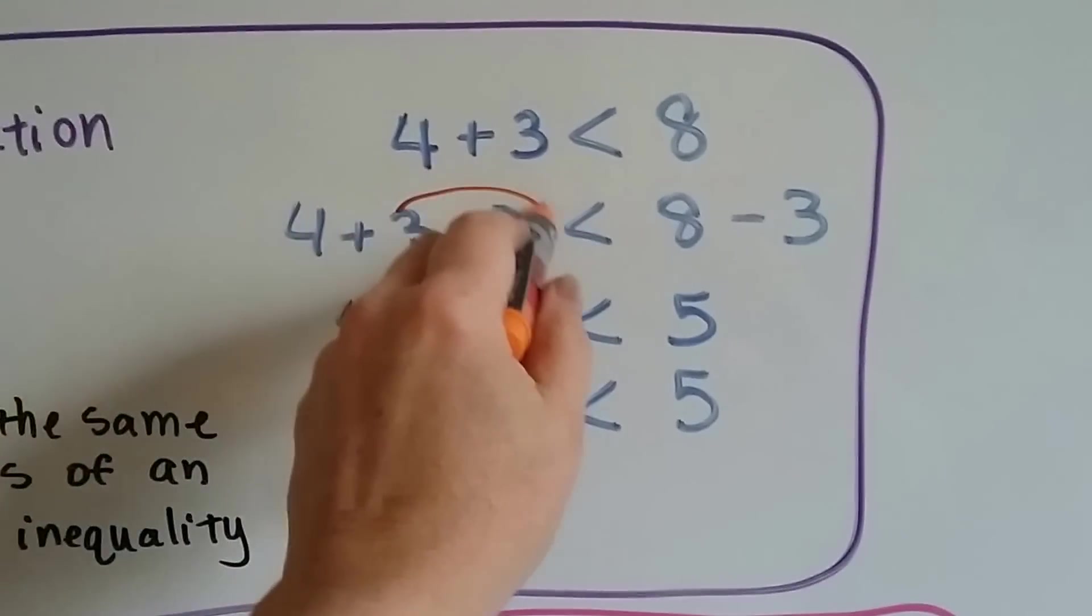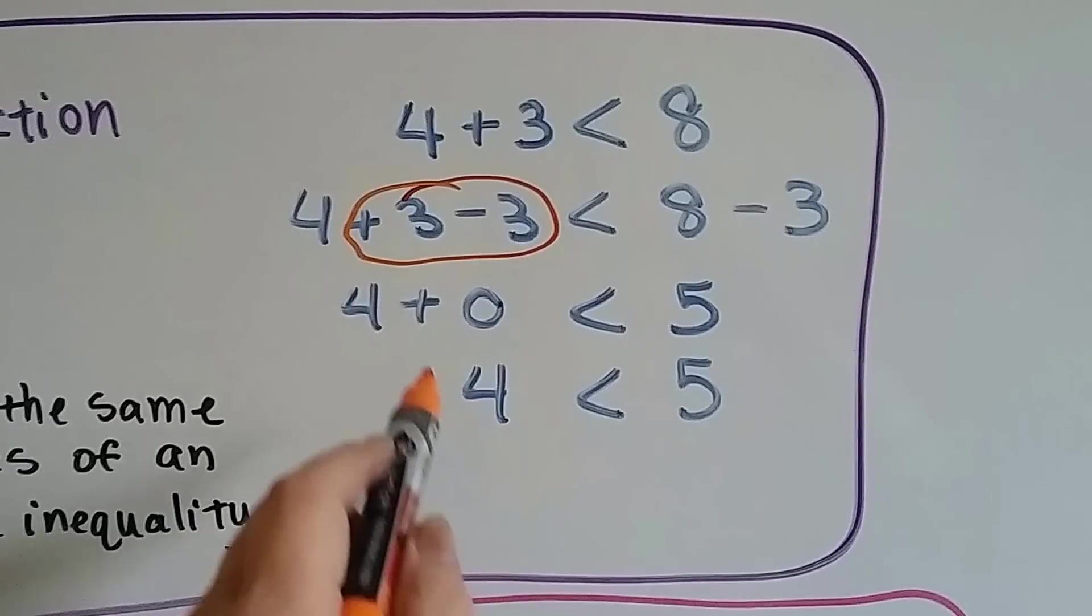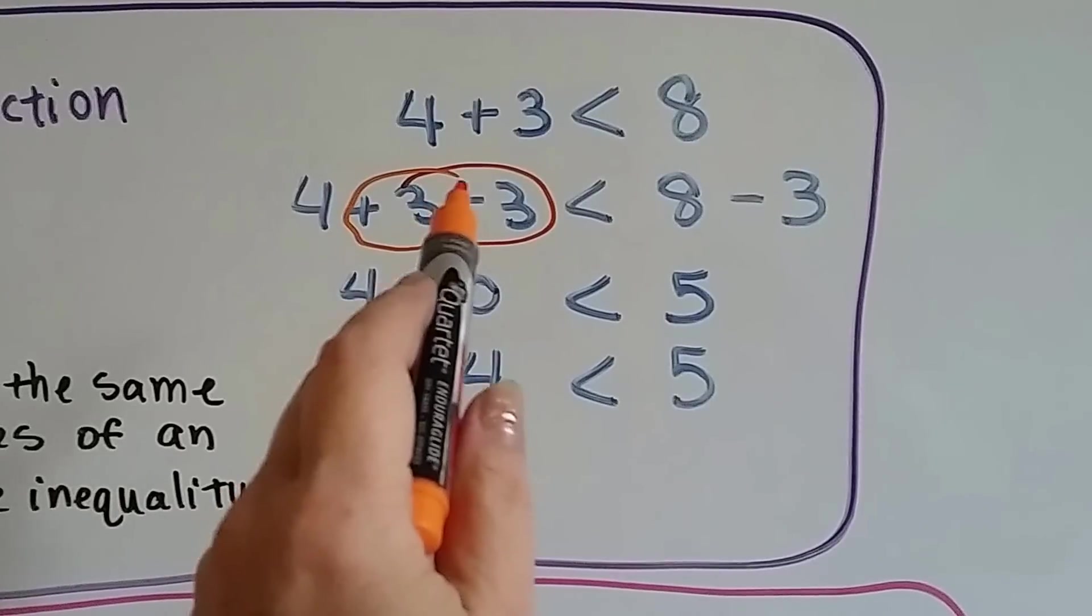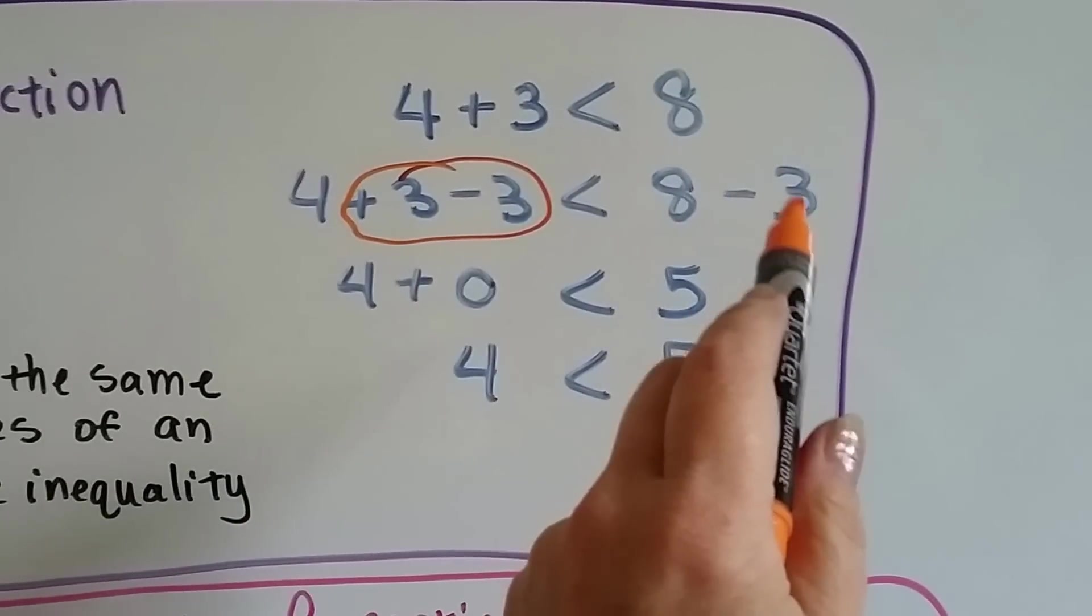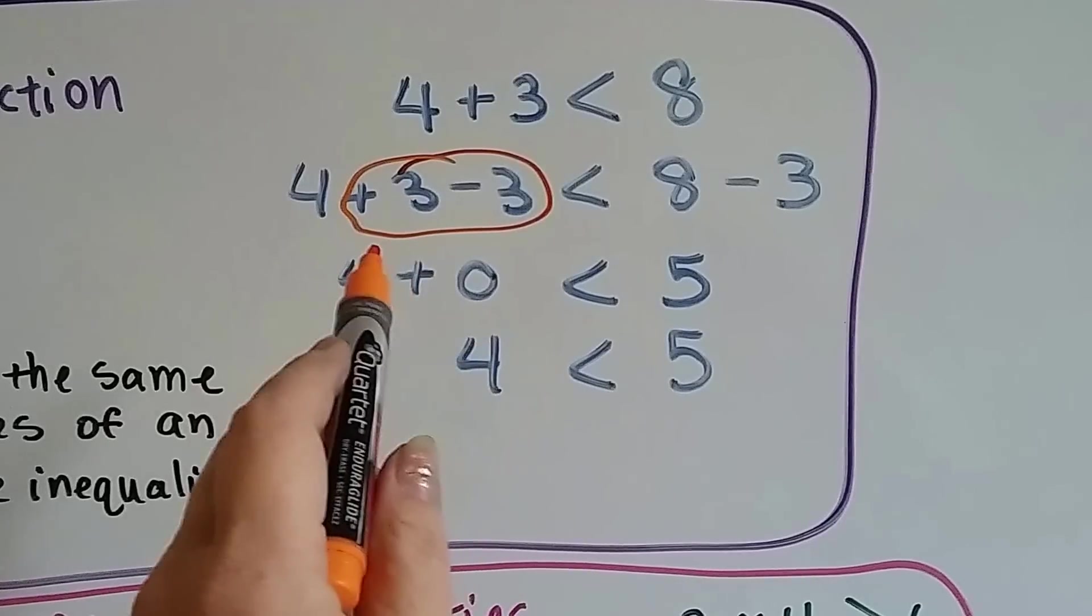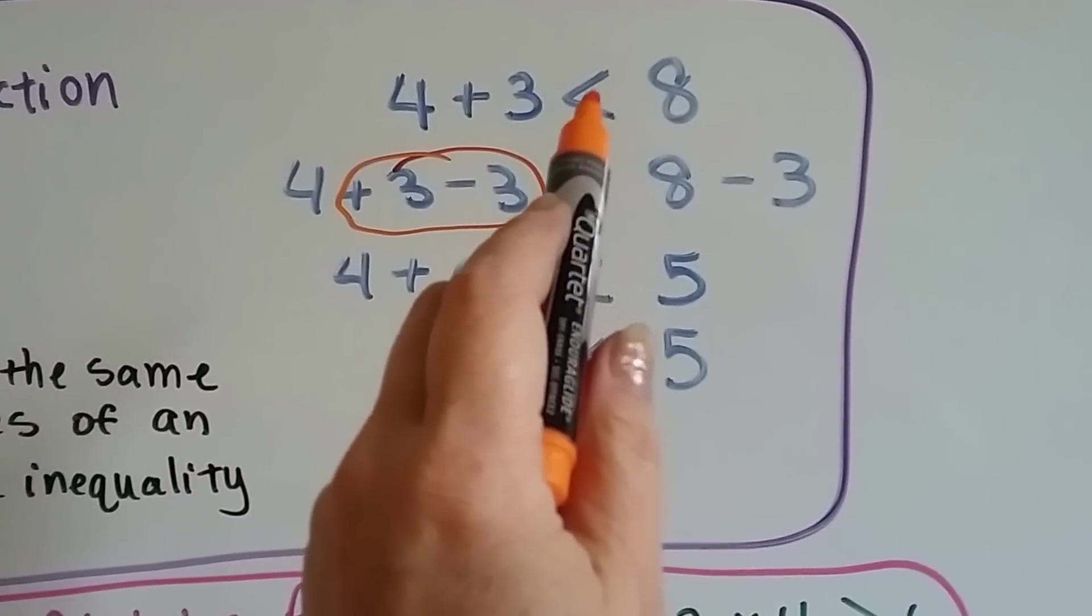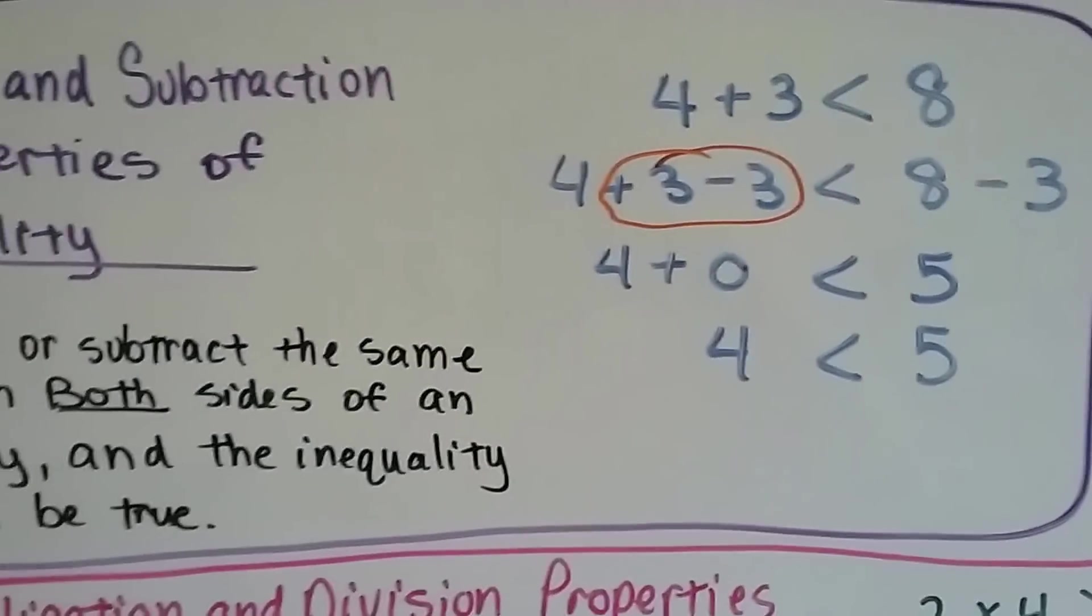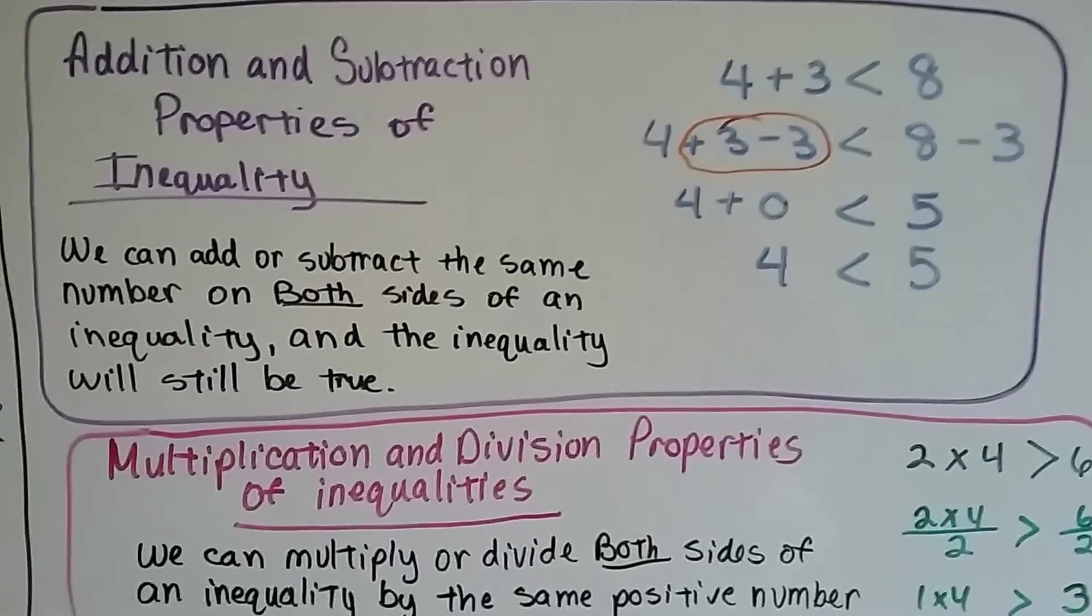So what they're saying is that this 0 pair is making this a 4 and a 5. By subtracting 3 from this side and subtracting 3 from this side, we're turning it from 4 plus 3 is less than 8 into 4 is less than 5. That's the addition and subtraction properties of inequalities.